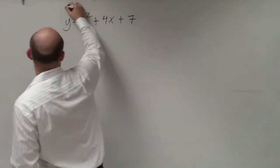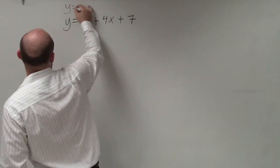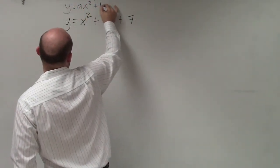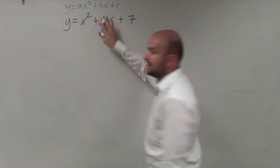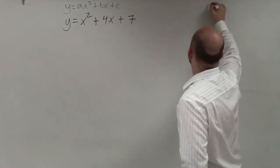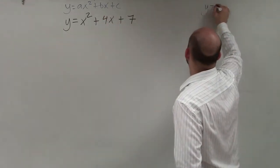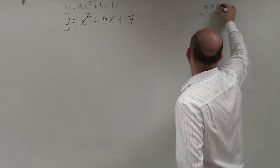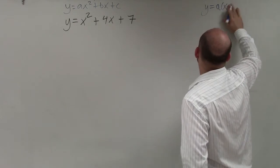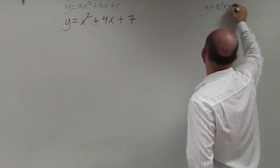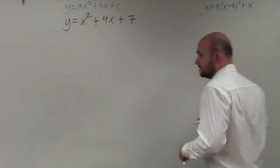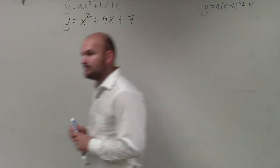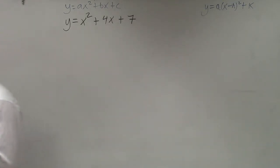Just a reminder: y equals ax squared plus bx plus c — that is your standard form. And we are going to want to rewrite this in vertex form: a times x minus h squared plus k. You guys remember those two forms, right? That's what we've done in the last two days.